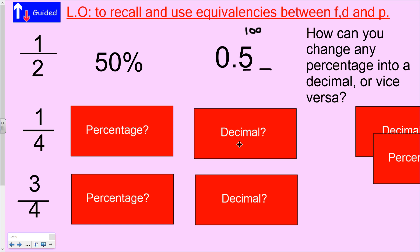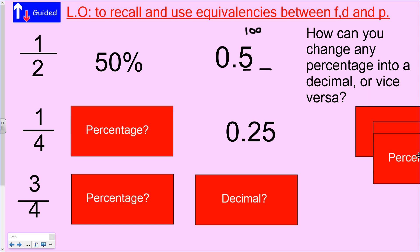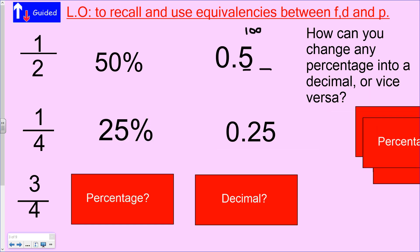One quarter — I always find it much easier to change it into a decimal first and then into a percentage. One quarter as a decimal is 0.25. It already has two decimal places, which makes our life much easier, so as a percentage that's going to be 25.